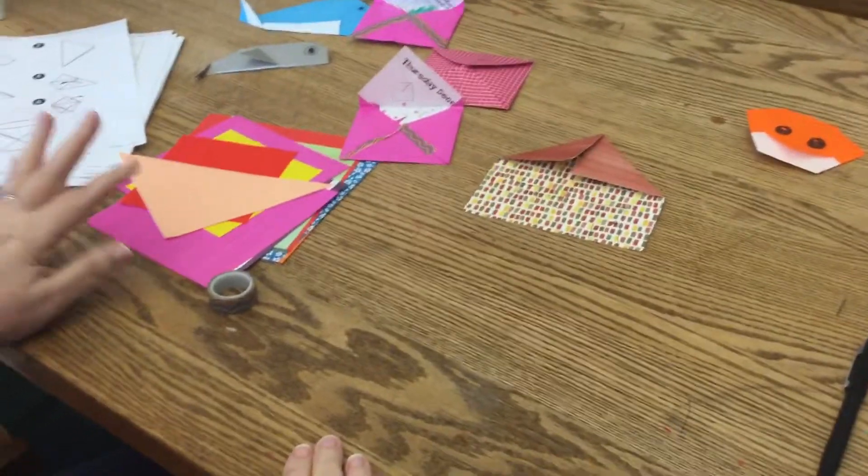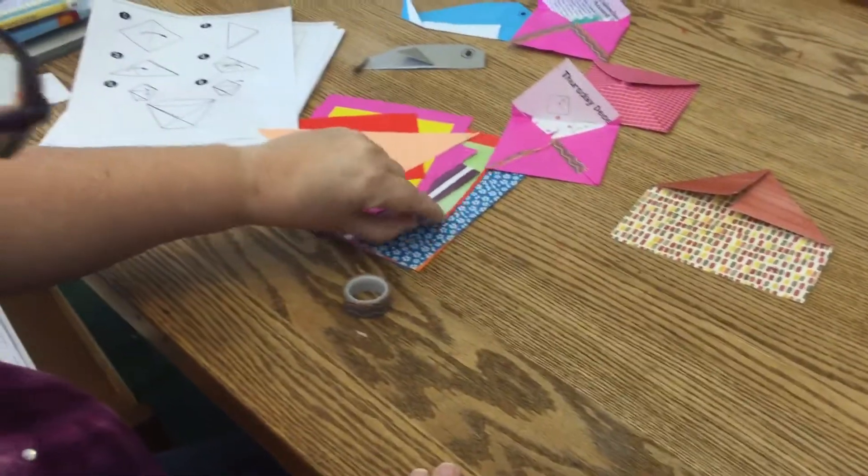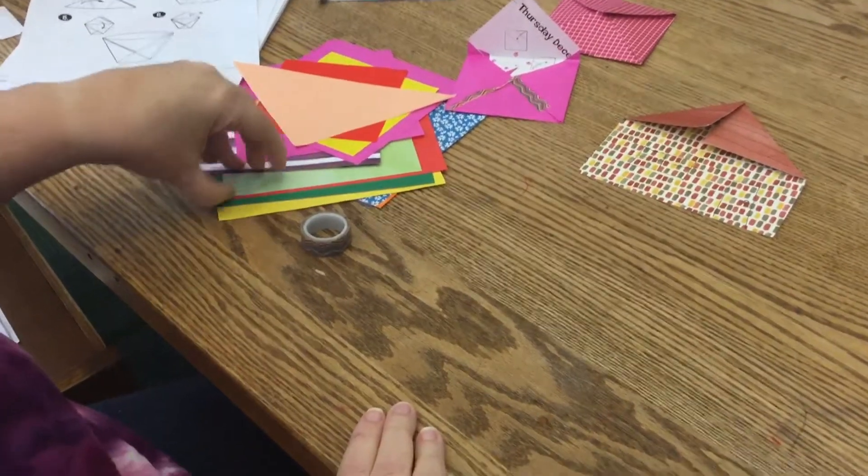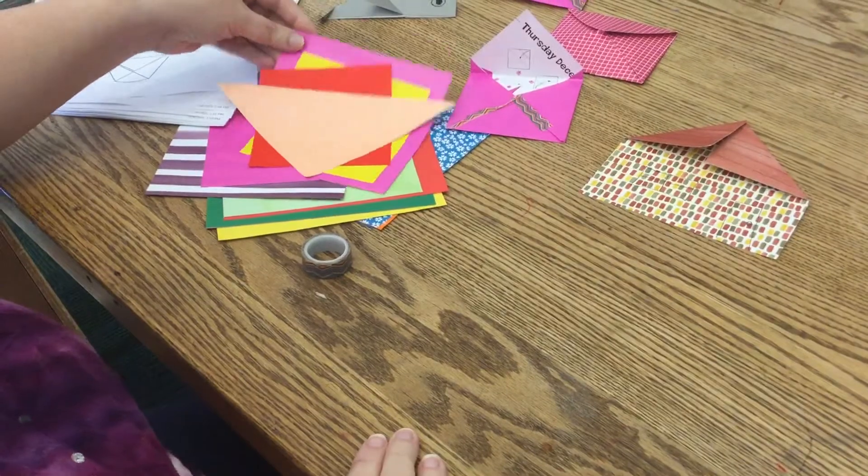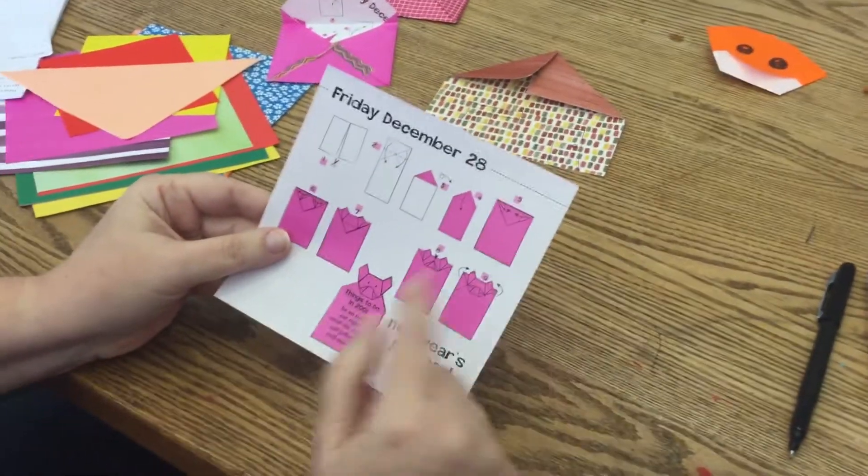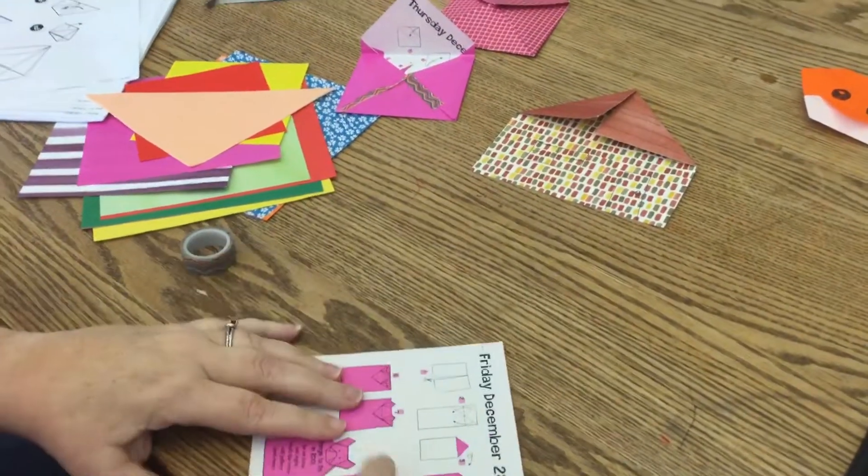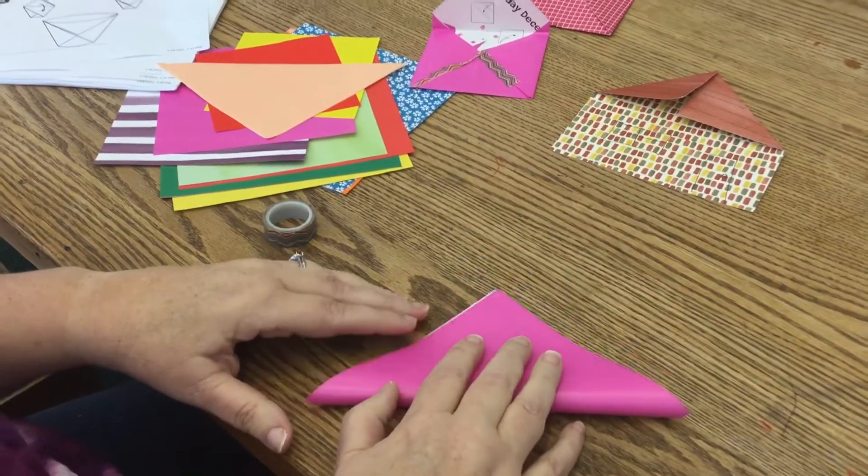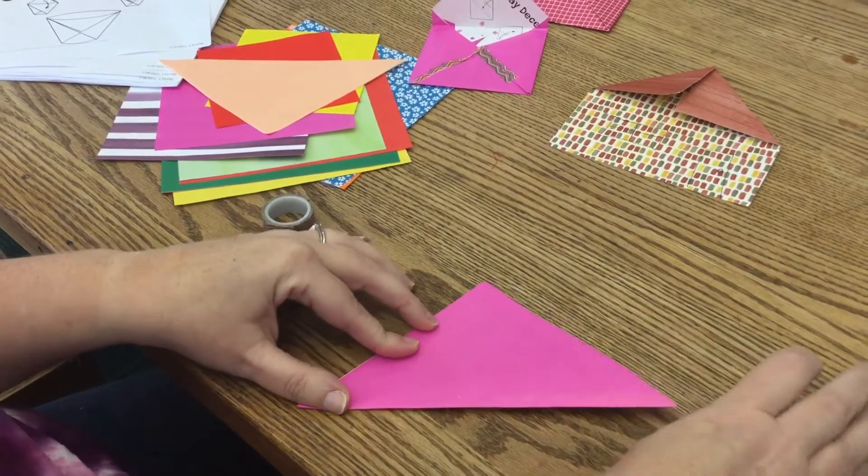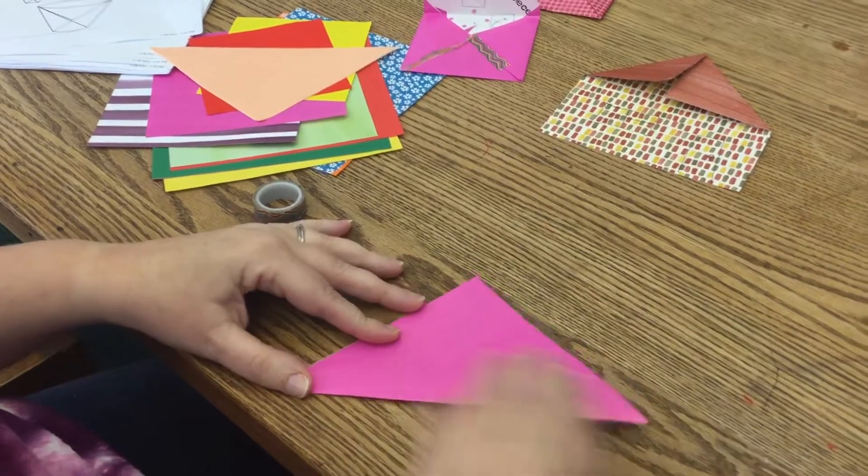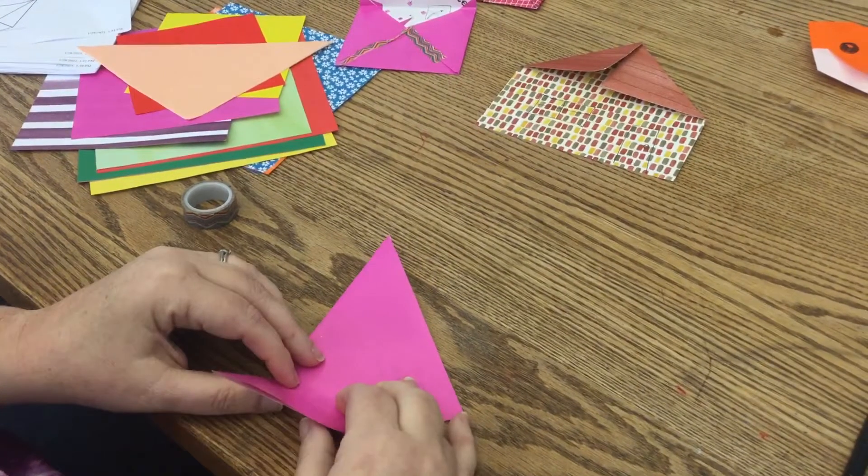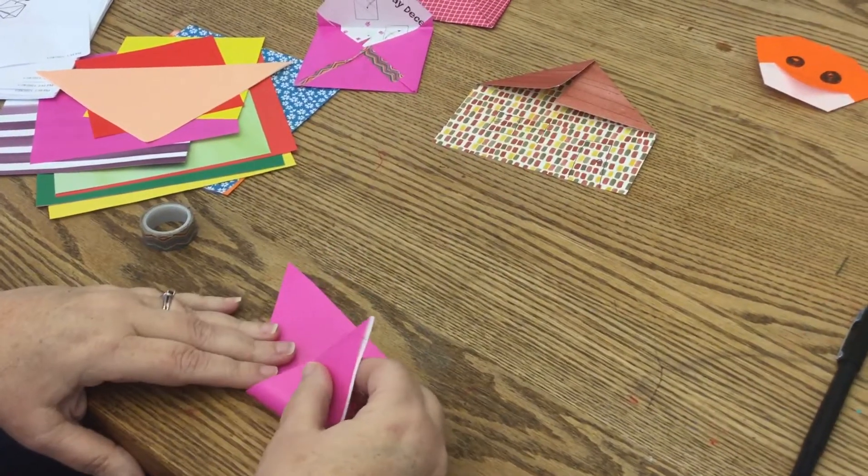So the next one is—I kind of like the pink. See, here's another one, we have another date paper because it's an origami calendar to learn different things. This next one, which you actually have directions for just in case you need them, is a cup. So you're going to fold it diagonal again, and then you're going to flip it to the side.